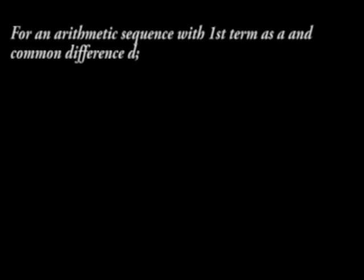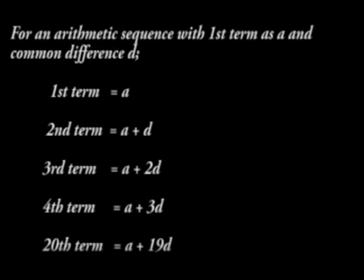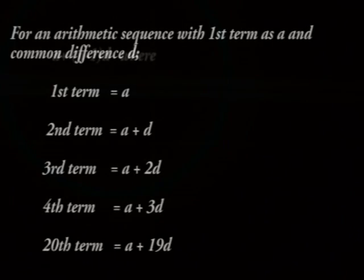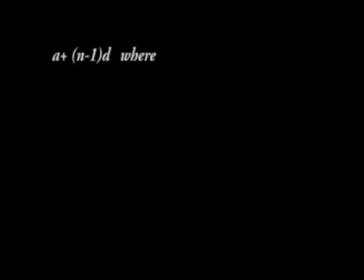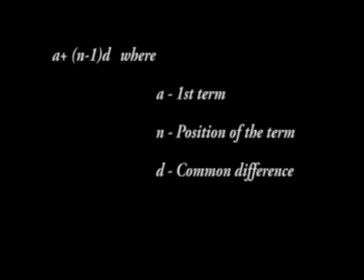For an arithmetic sequence with first term as A and common difference D, the first term is indicated as A, second term is A plus D, third term is A plus 2D, and so forth. Note that the coefficient of D is 1 less the position of the term. The 50th term is given by A plus 49D. Thus, the rule governing arithmetic sequences is A plus N minus 1 times D, where A is the first term, N is the position of the term, and D is the common difference.